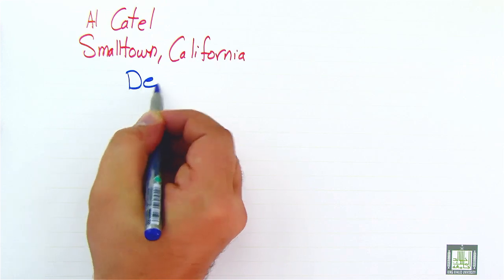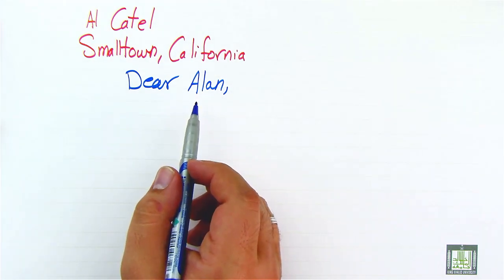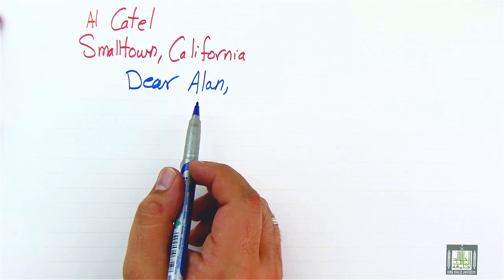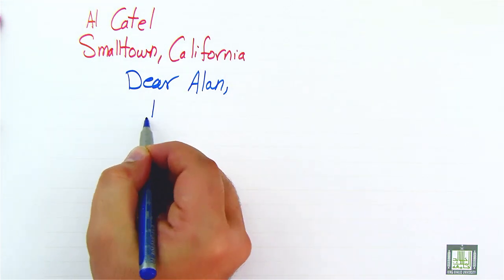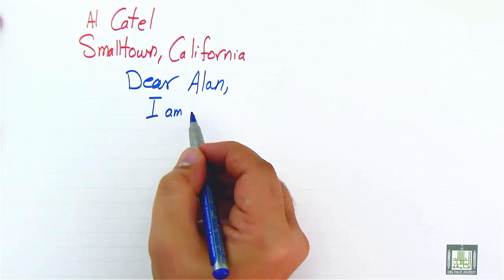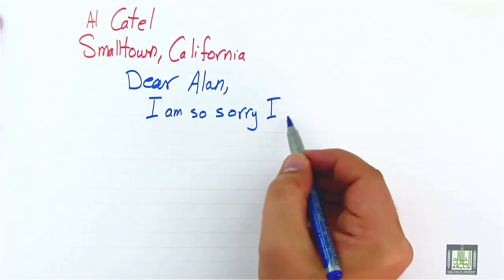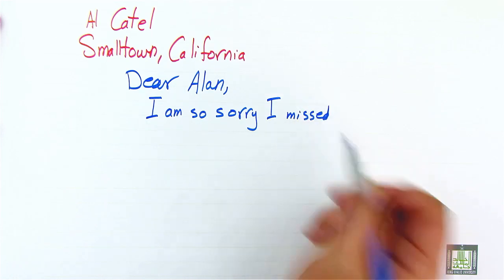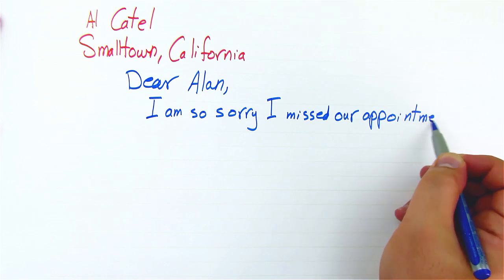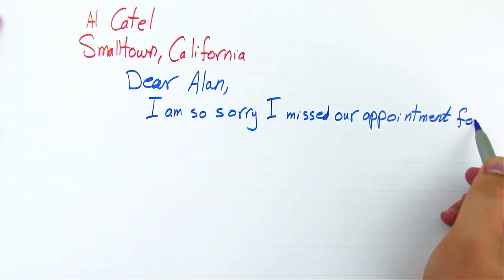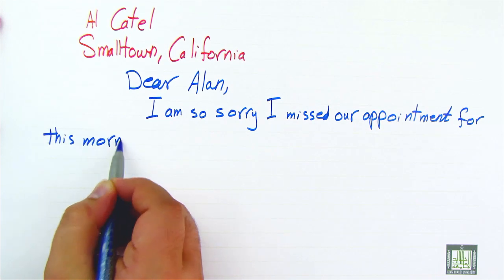We start with the greeting: 'Dear Alan.' Alan is the person with whom I was supposed to have the appointment. I start immediately offering the apology: 'I am so sorry I missed our appointment for this morning.'